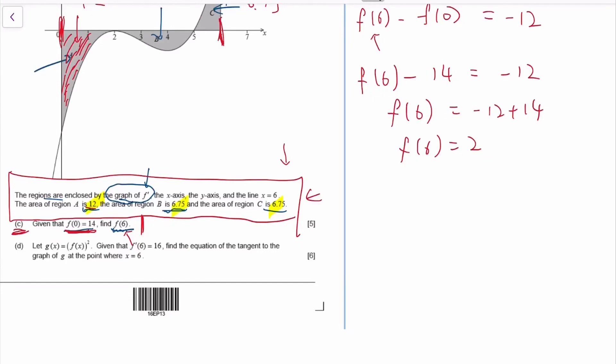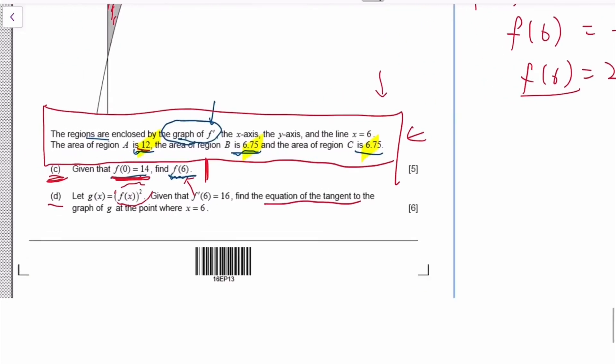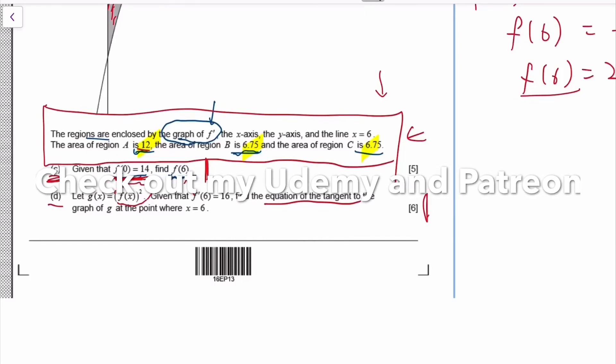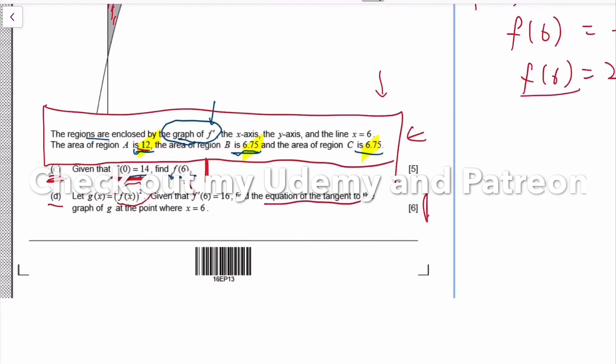Now with the value of F(6), you will need that to find the equation of tangents for F(x) squared. That's part D. I think I've done something similar in the part on differentiation during this course, so I think I will skip that. But this is still not the easiest thing you can do. You might want to challenge yourself by doing it.